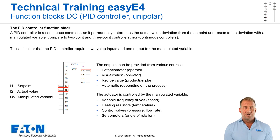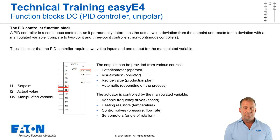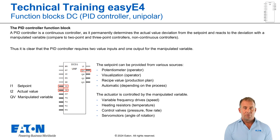The actuator is controlled by the manipulated variable QV. These can be variable frequency drives (for example for speed), heating resistors (for example for temperature), control valves (for example for pressure or flow rate), or servo motors (for example for angle of rotation).